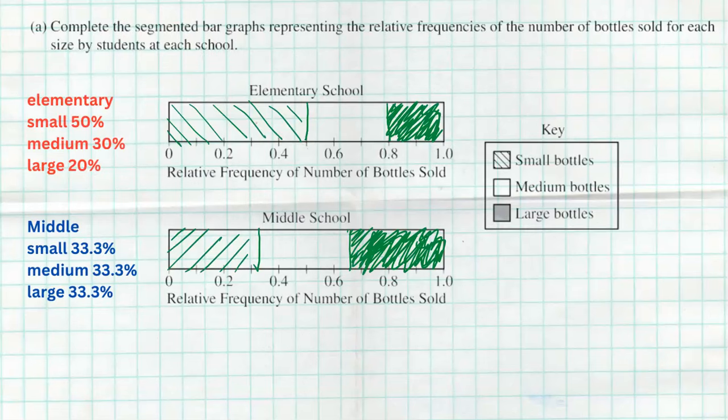All right, part B says an administrator at the elementary school concluded that the elementary school students sold more small bottles than the middle school students did. Is the elementary school administrator's conclusion correct? Explain your answer. Well, first, no, he is not correct. Now before I reveal my full nice typed up answer, let's just think about it. He probably was simply looking at 50%, or maybe he just looked at this chart and saw, ah, look at the lined region for small. Clearly elementary is bigger, 50%, 33.3%. 50% is bigger, I mean proportionally it's bigger, but we were told one crucial piece of information: at the middle school they sold three times as many total bottles.